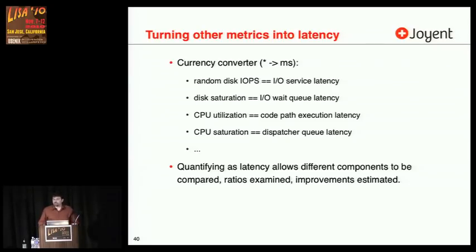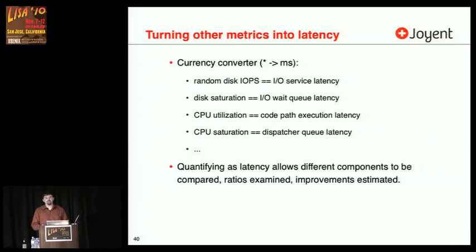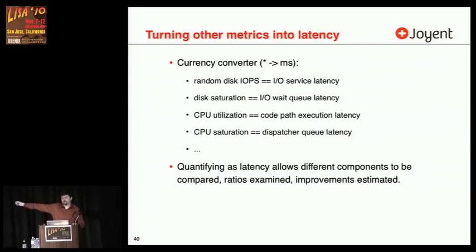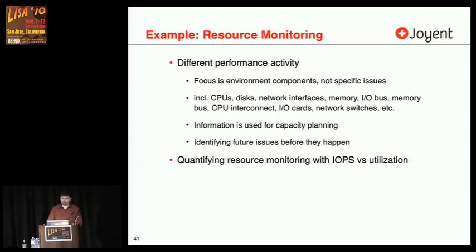If you can, you can turn other metrics into latency as a currency converter: random disk IOPS — use IO service latency; disk saturation where a resource is fully utilized and things are queuing — use IO wait queue latency; CPU utilization — code path execution latency, measurable with DTrace; CPU saturation — dispatch queue latency. If I can convert different potential performance issues into latency, I can compare them together, quantify the issue, locate the issue, and prove that the issue is fixed.